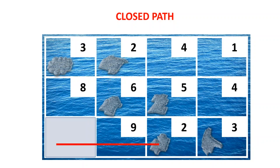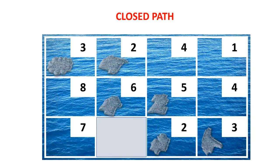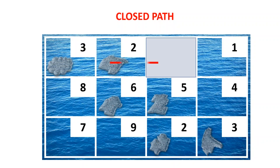That gives a closed path for that cell. For the next one, you go right, up, left, and down. Notice that there will always be one unique closed path starting from the empty cell using only horizontal and vertical movements. For the next cell, you go left, down, right, and back up again.